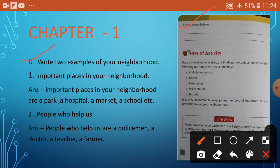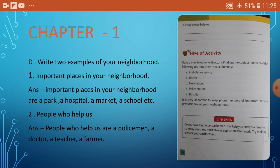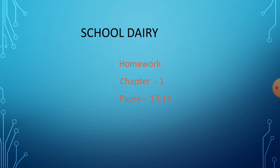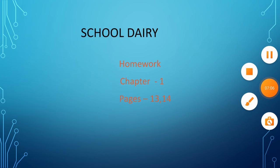People who help us. Answer: People who help us are a policeman, a doctor, a teacher, a farmer. I hope everyone understood. So children, practice this page — pages 13 and 14. Take out your school diary and write your homework: Chapter 1, pages 13 and 14.